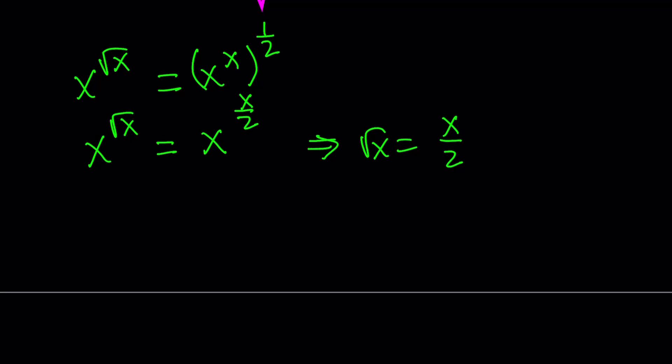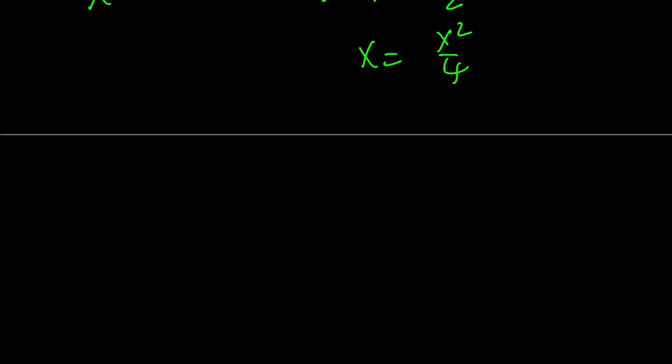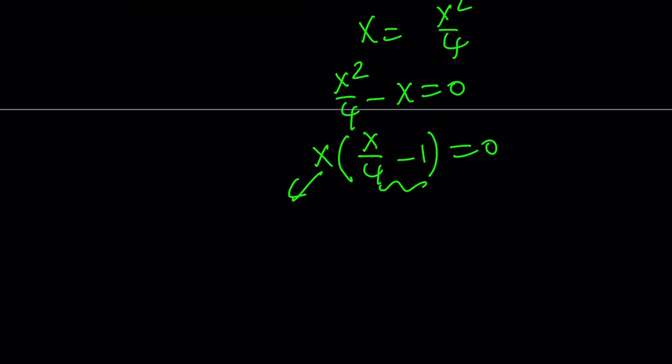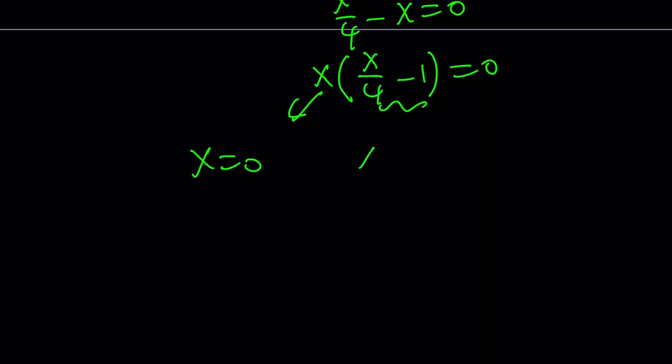Let's square both sides. We get x = x²/4. Now, you may want to divide both sides by x, but don't do it because you may lose some roots. Instead, put everything on the same side and factor. I can take out an x. That gives me x(x/4 - 1) = 0. From here, either this is 0 or that is 0, which means x is either 0 or 4.